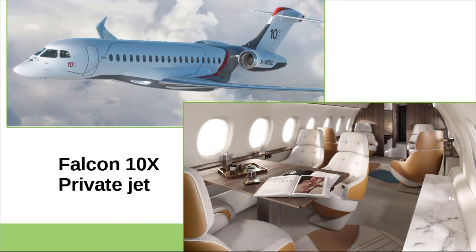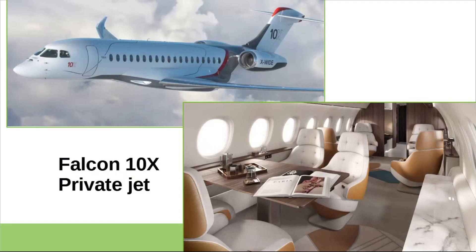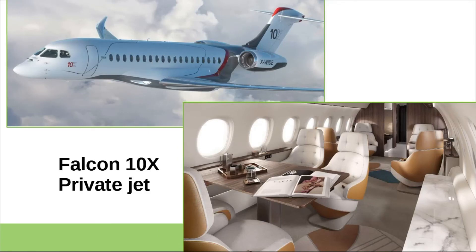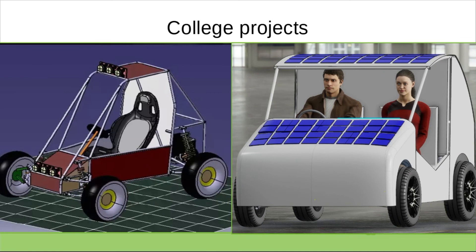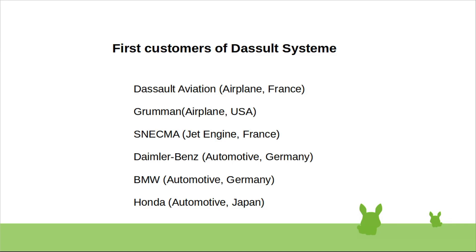Let's talk about the requirements to learn CATIA and the scope of this software — where you can get a job after learning it. Anyone with an engineering or technical degree can learn this software; it is not for students who don't have a technical background. If you are an engineering student, this software will help you design your college project, and you can also take 3D prints using it. The scope of this software is very large — you'll find mostly big companies using CATIA as their design software.